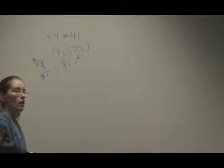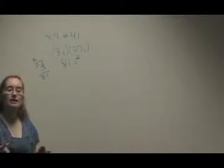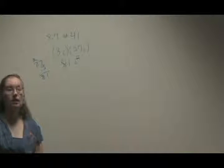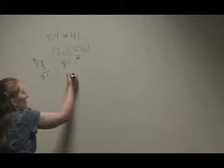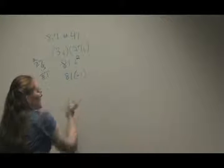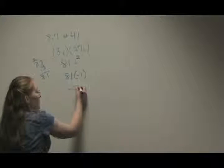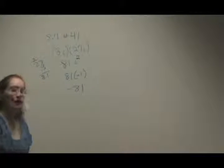Now, one of the things you should know is what does i squared equal? i squared equals negative 1. So I can rewrite this as 81 times negative 1. My final answer is negative 81.